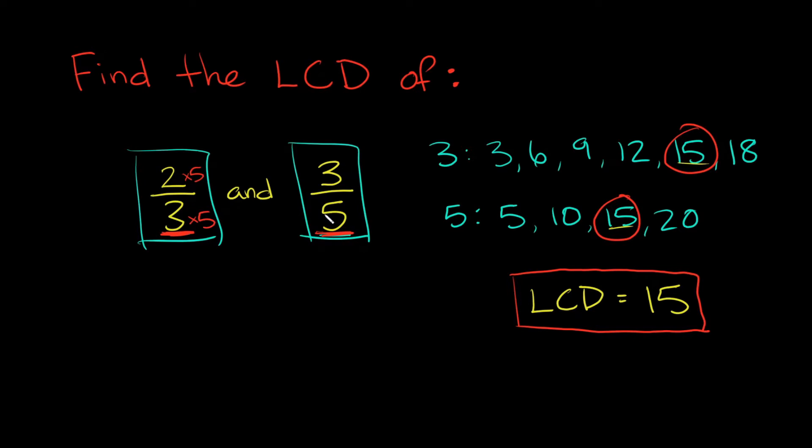And then you could do the same thing with this fraction over here, three-fifths. So I have a five in the denominator. How can I change that to 15? Well, I could multiply by three, right? Because five times three is 15. But again, whatever I do to the bottom, I have to do to the top, right?